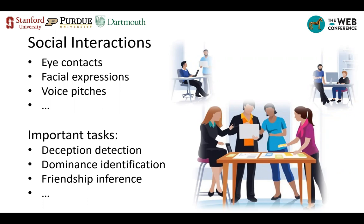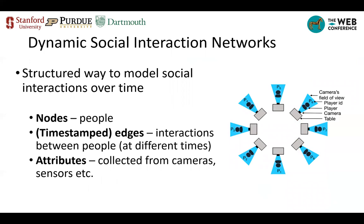Recent years have seen a lot of interest in studying patterns of human behaviors in social interaction. Given observations of those interactions, researchers are usually interested in making inference about certain social characteristics of people. Representative cases include detecting hidden liars in the group, identifying the level of dominance, or making inference about people's friendship.